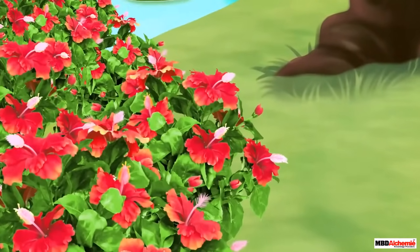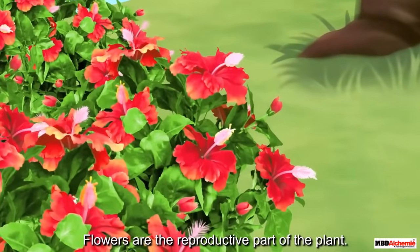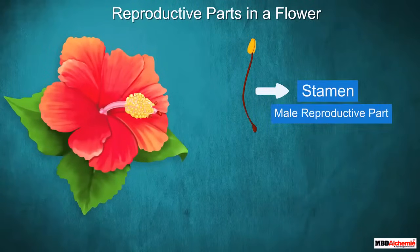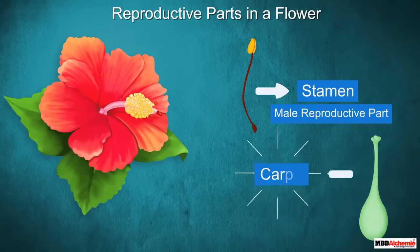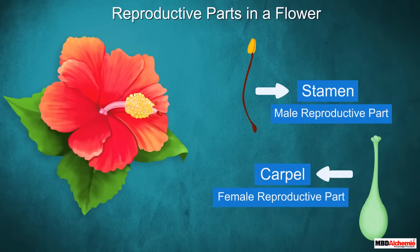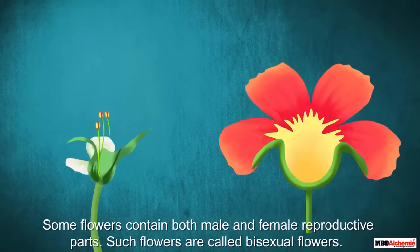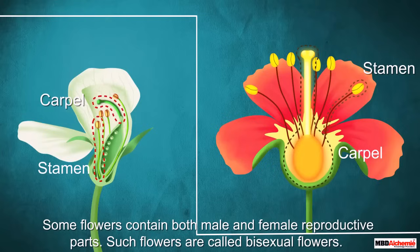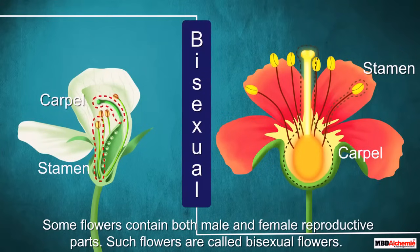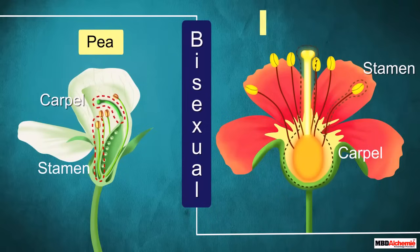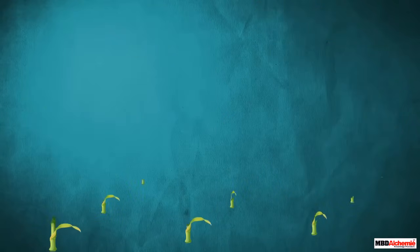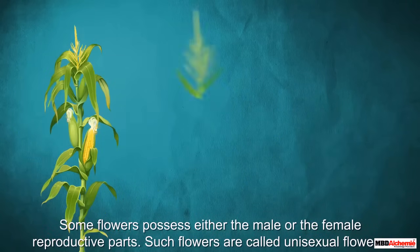You already know that flowers are not present only to add beauty to the plant — they are in fact the reproductive part of the plant. In the flower, the stamen is the male reproductive part while the carpel is the female reproductive part. Some flowers contain both male and female reproductive parts; such flowers are called bisexual flowers, for example pea and china rose.